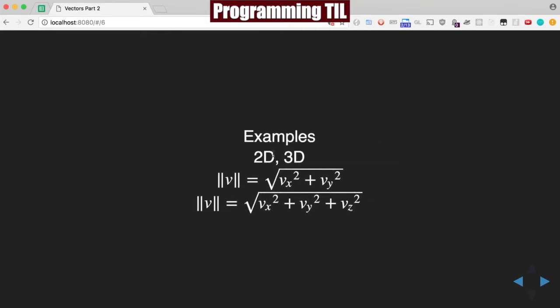Some examples: in 2D, we have the square root of v_x squared plus v_y squared. In 3D, it's the square root of v_x squared plus v_y squared plus v_z squared.